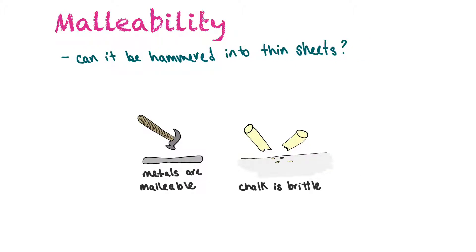Malleability is whether something can be hammered into thin sheets. Metals are malleable, which is why we use them for many functions — we can hammer them into many different forms. Chalk is not malleable; if you tried to hammer a piece of chalk, it would break into many pieces. So chalk is described as brittle, which is the opposite of malleable.